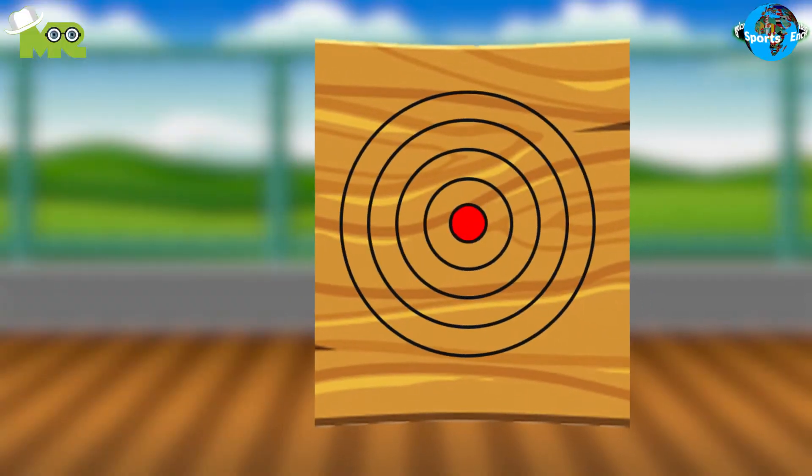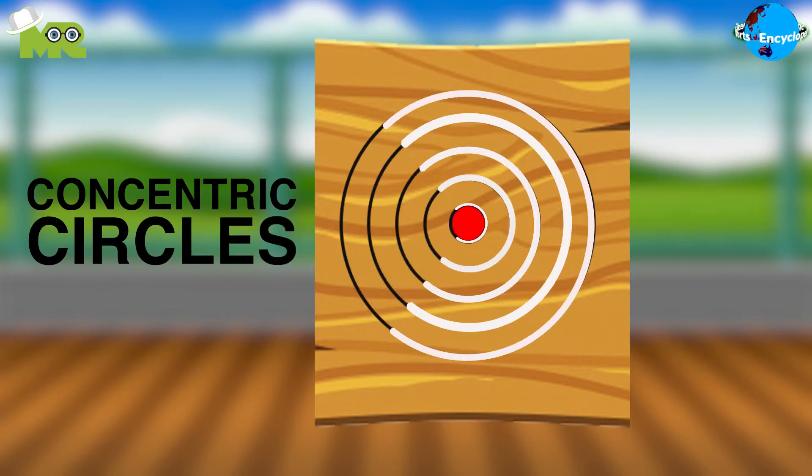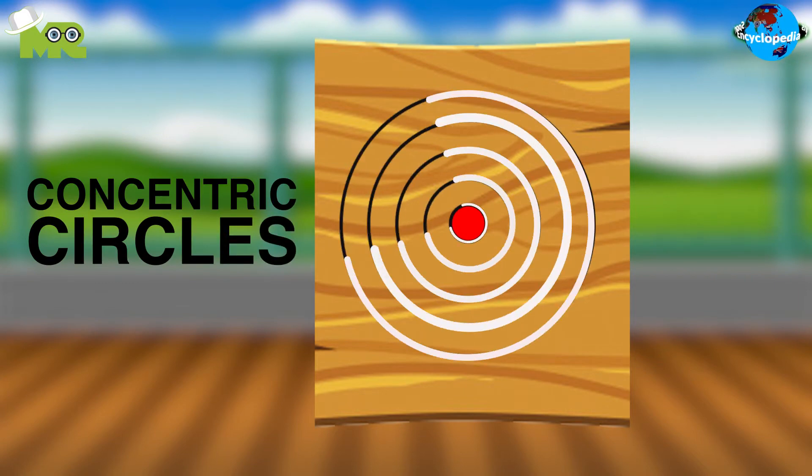The circular board is made out of wood with five four-inch wide, color-coded concentric circles used as the target.